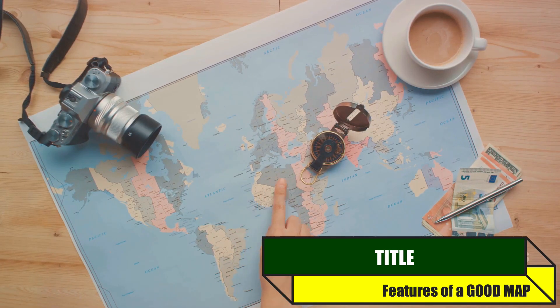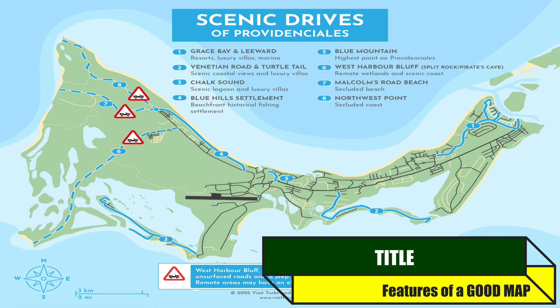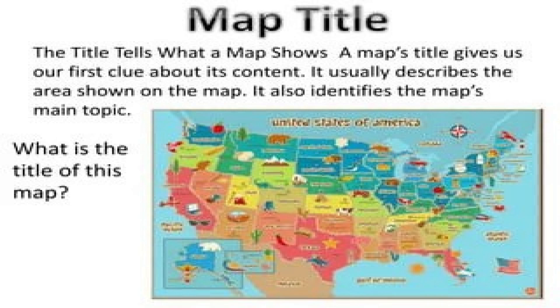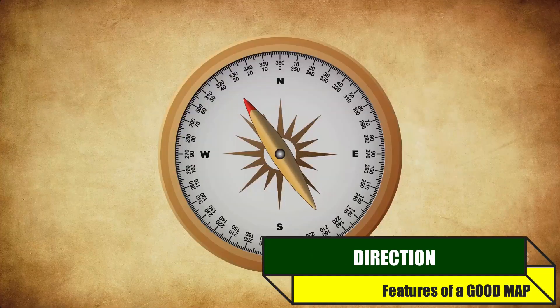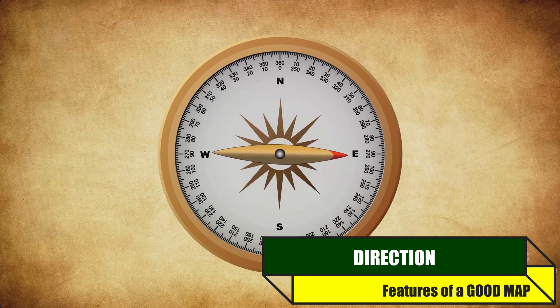The title of the map is its name or describes what the map is showing. Direction — usually indicated by a compass rose or a simple north arrow — is another must-have feature, guiding the viewer's understanding of the map's orientation.